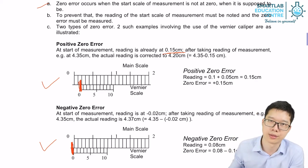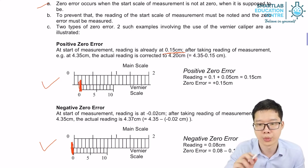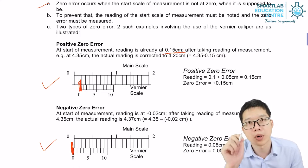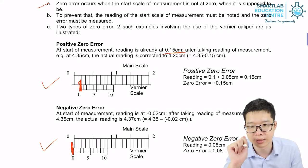So how are we going to deal with the zero error? We minus them away. So whatever reading you get in the end, you minus away. For positive, you minus away a positive number. For negative, you minus away a negative number.